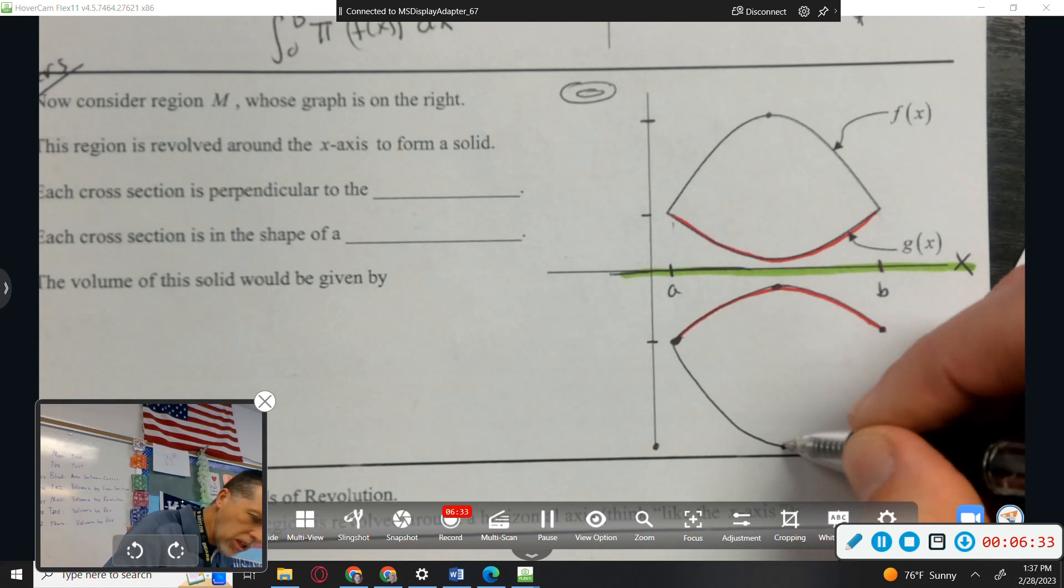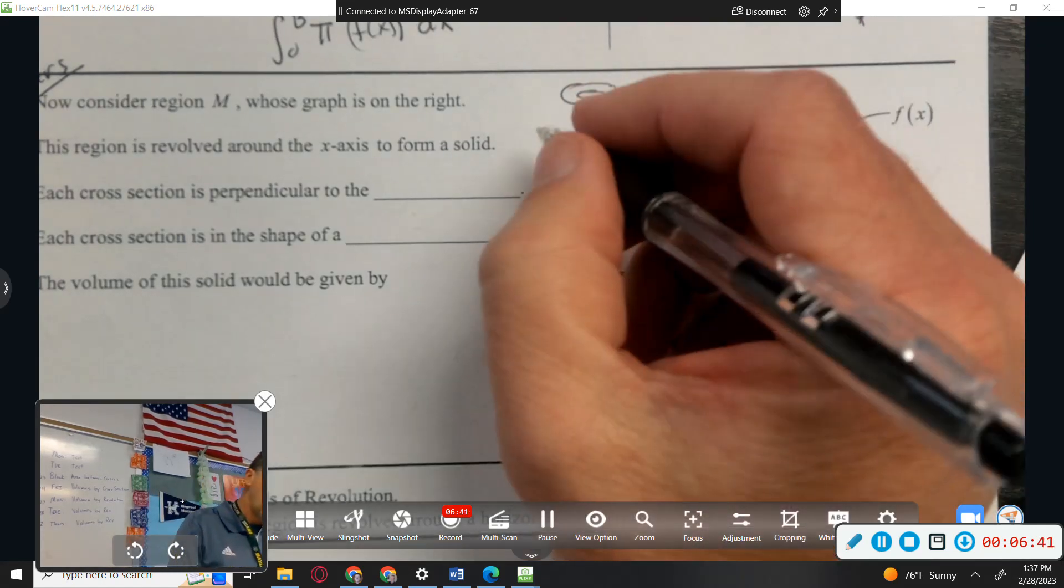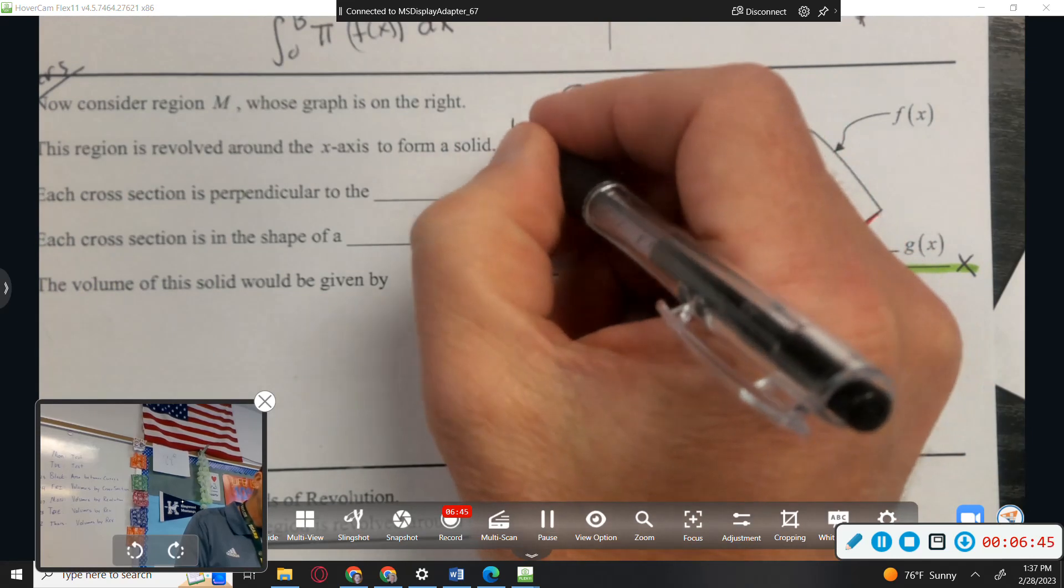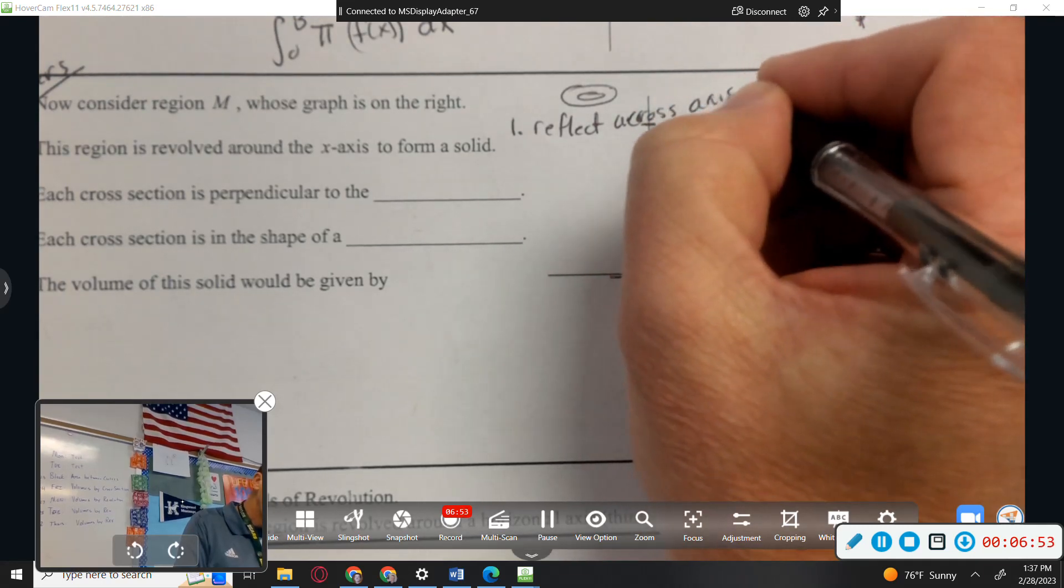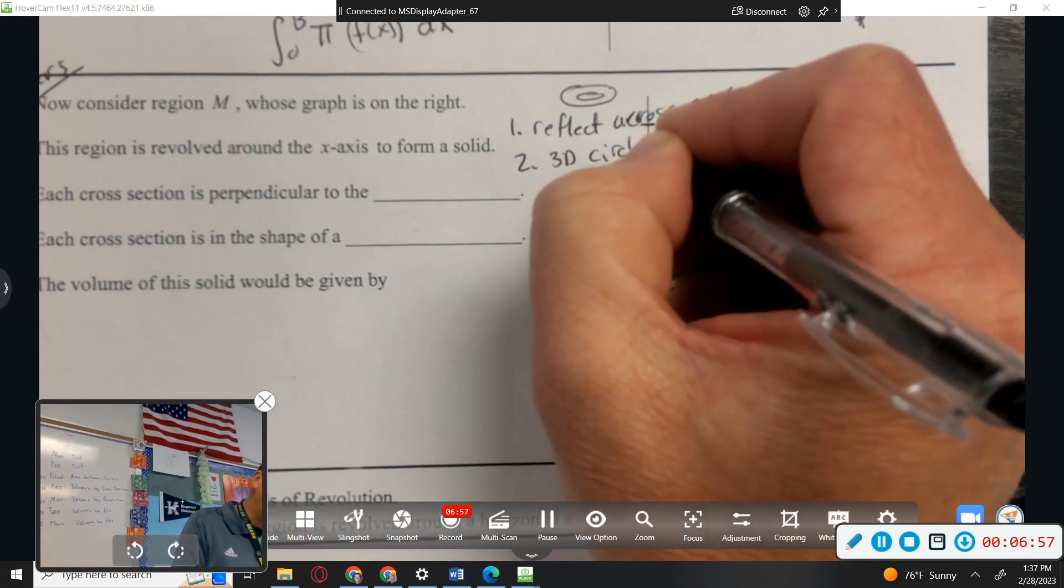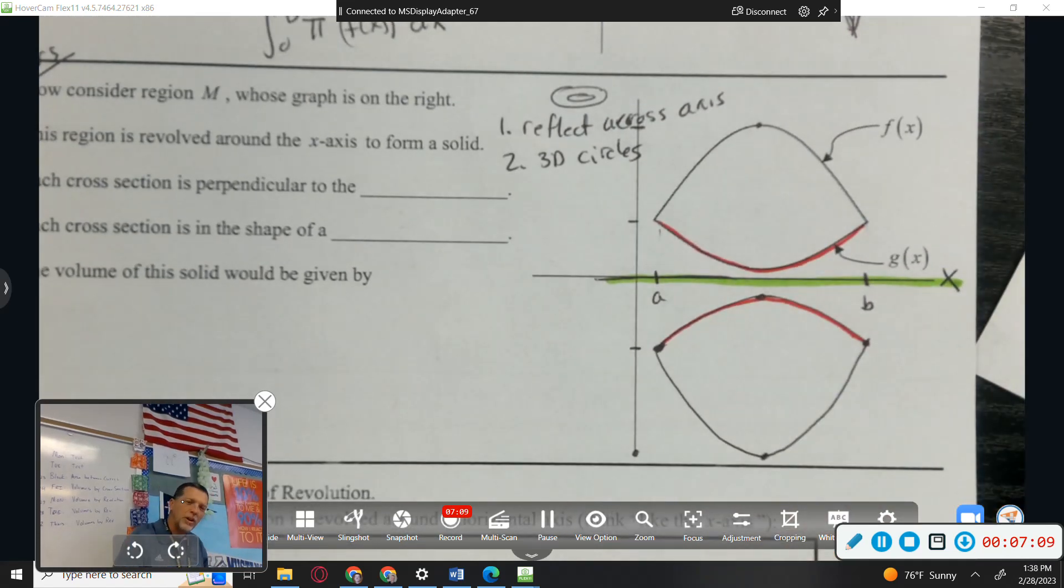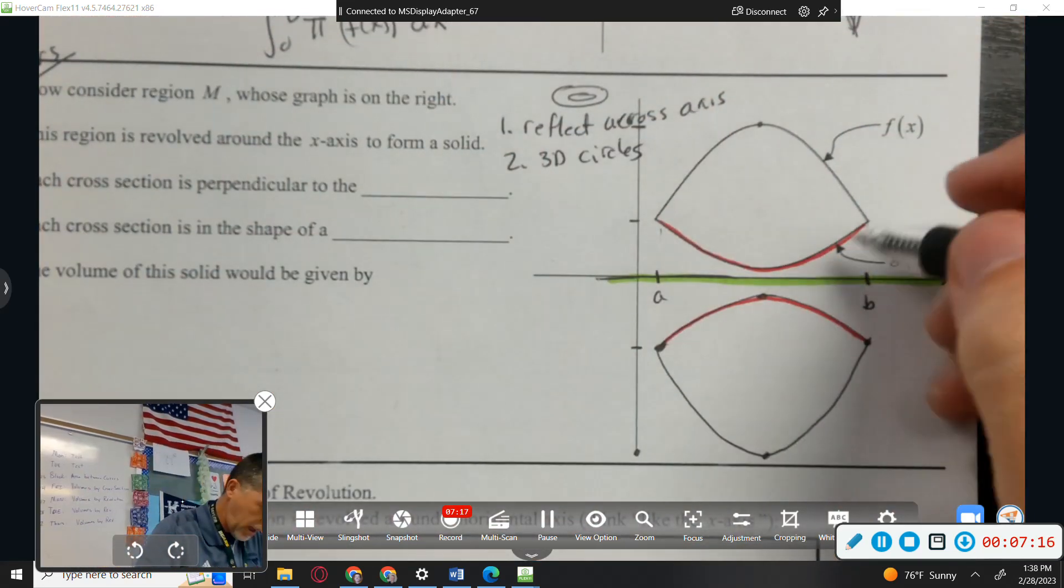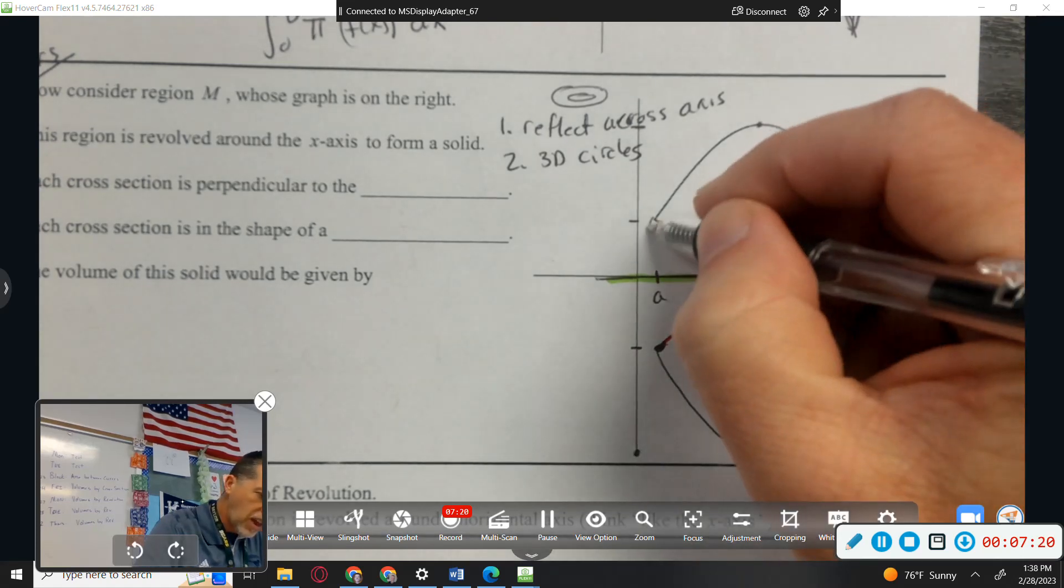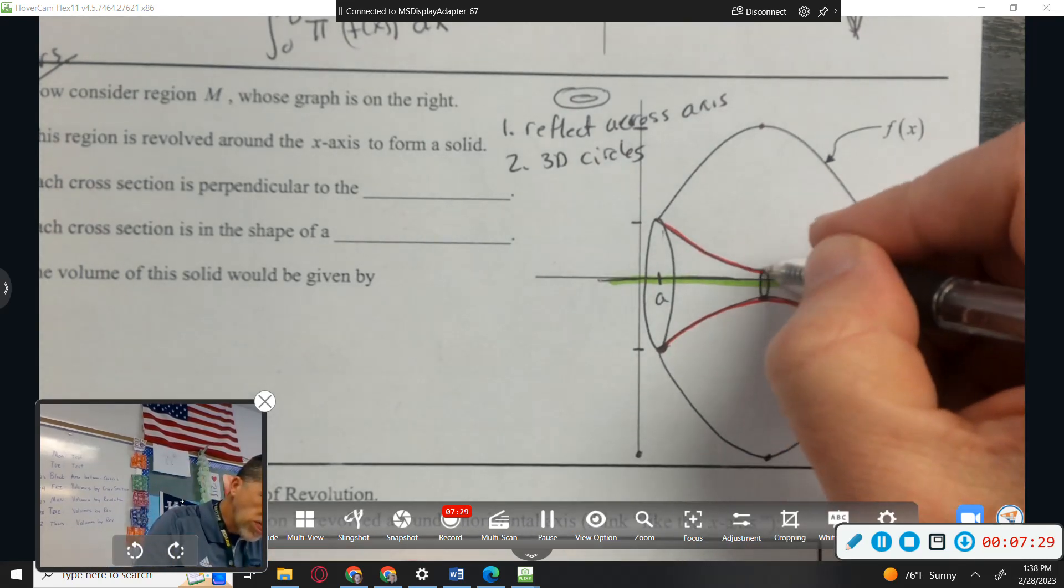It looks almost like a gumdrop. Or maybe like a cartoon eye when they're so tired. No, it looks like an acorn. The bottom one looks like an acorn, yes. The top one looks like an upside down acorn. Excellent. Okay, the trouble is, or the trick is, that's not a 2D shape. That happened when we rotated this whole thing out of the page and down to the bottom, out of the page, down to the bottom, and onto the back. I'm going to try to draw some circles on the ends.